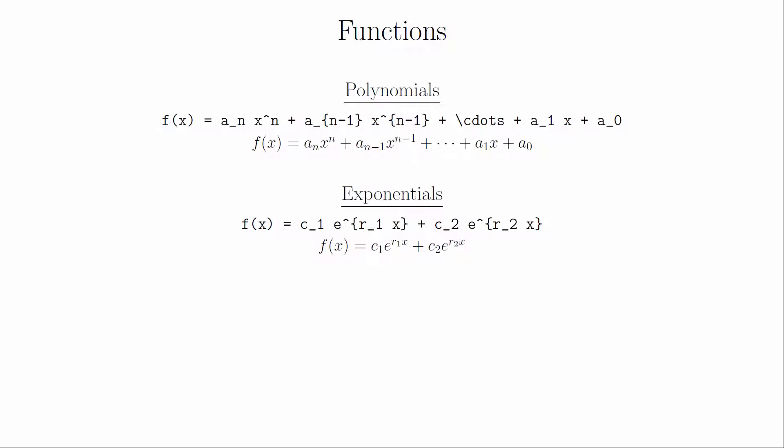The first thing we'll need to be able to do is typeset the major functions. Both polynomials and exponentials simply use the basic arithmetic symbols and superscripts for exponents. We've already seen these in an earlier video. To typeset the trigonometric functions and logarithms, you will simply use a backslash before the function name. If you don't do this, your function name will be typeset as if it's a product of individual variables.